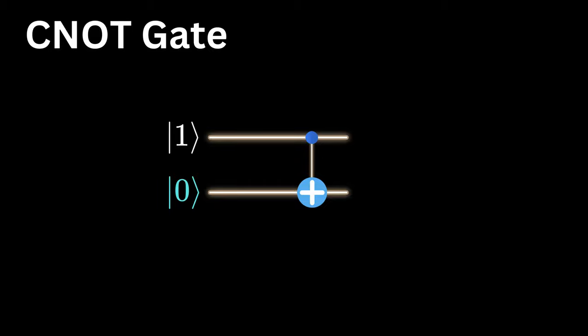In this case, since the control qubit is set to 1, the target qubit flips the state from 0 to 1.